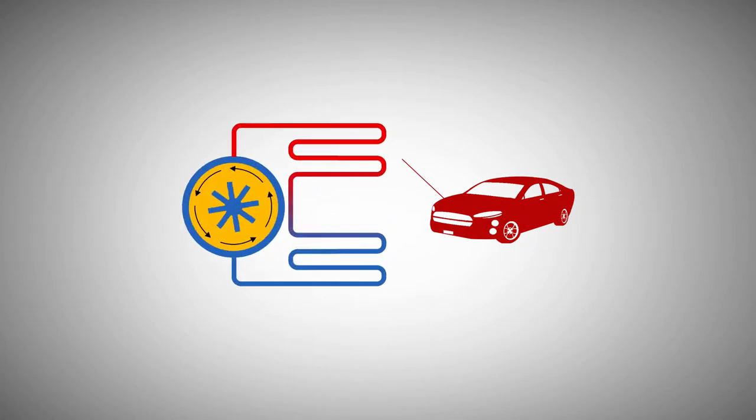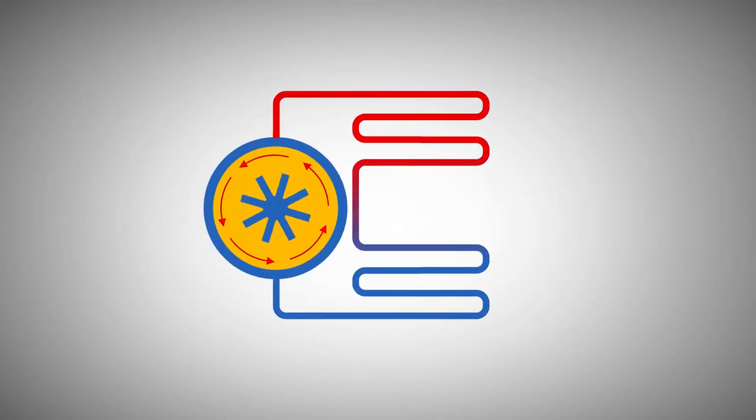As the AC system ages, a low system charge causes poor oil circulation. The extra heat created breaks down the additive package and contributes to reduced oil and compressor life.